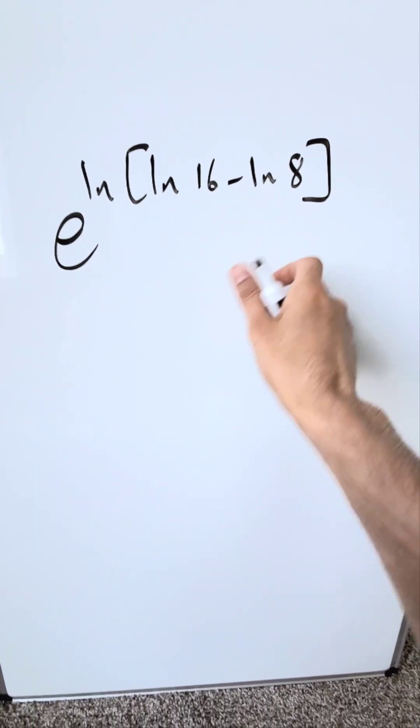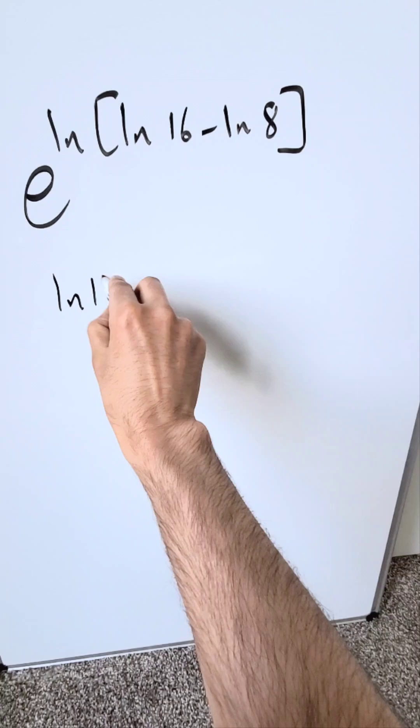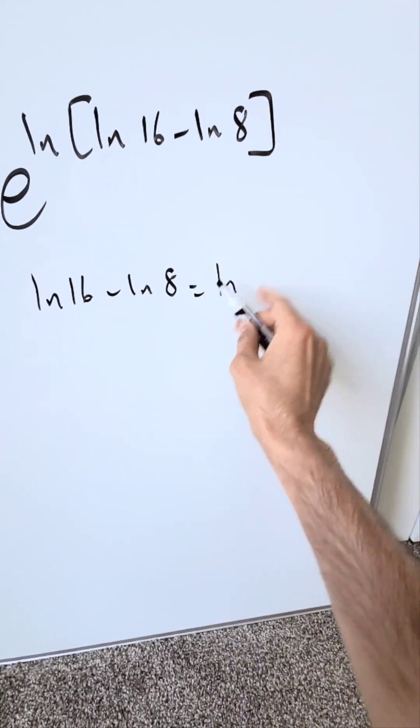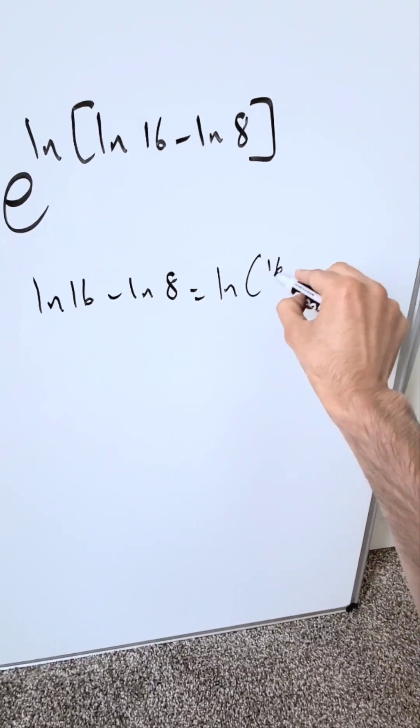We will look at the parentheses item first. Natural log 16 minus natural log 8, you have independent logs of the difference. It becomes here a common log with the quotient 16 over 8.